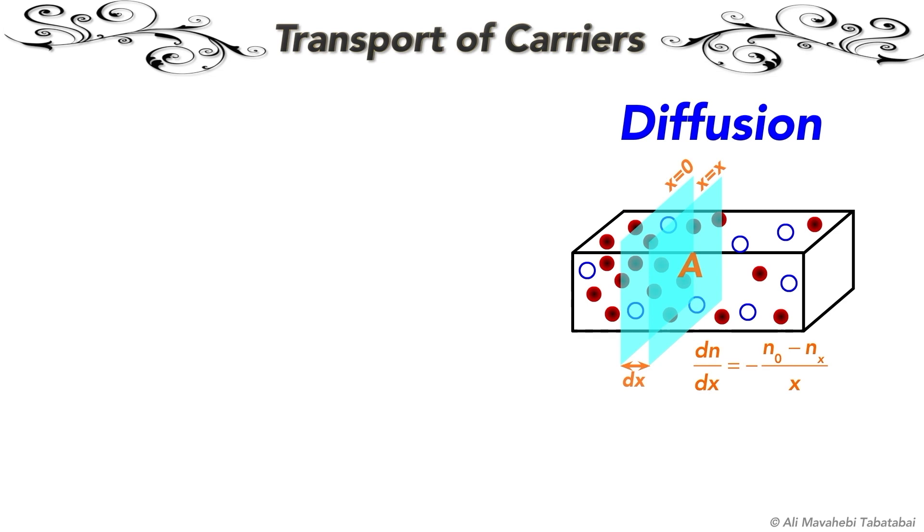Therefore, electrons diffuse from x0 area to x area, so that the concentration gradient dN over dx becomes 0.